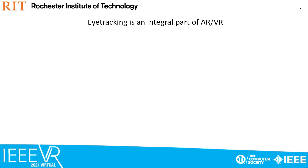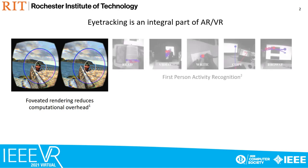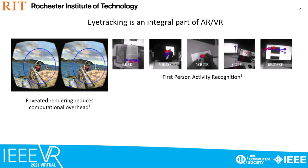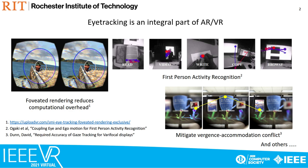Eye tracking is rapidly emerging as an integral component of AR and VR solutions. Some applications include foveated rendering, where virtual content located in the peripheral visual field is rendered with lower spatial detail, reducing computational overheads. Eye tracking also aids in recognizing activities from AR egocentric head-mounted systems, and drives varifocal displays which help mitigate the vergence-accommodation conflict for AR and VR applications.